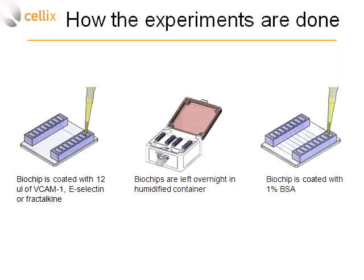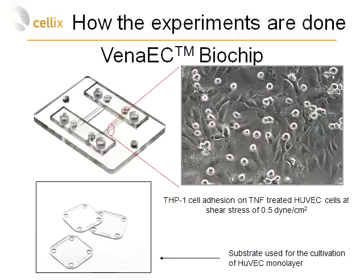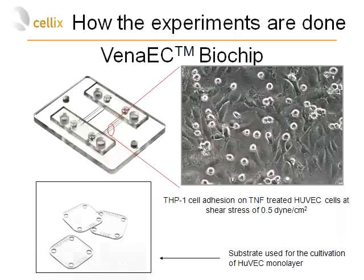Biochips are pre-coated by pipetting 12 microlitres of VCAM-1, E-selectin, or fractalkine into the channels, then stored overnight in a humidified container to allow ligand binding. Prior to experiments, biochips are blocked with 1% BSA to avoid non-specific adhesion. Additionally, we used Vena AC biochips, where endothelial cells can be cultured over 48 hours on a plastic substrate, and then the chip is assembled to form two channels over the endothelial cells, allowing study of monocyte interaction with a treated endothelial layer at a specified shear stress.